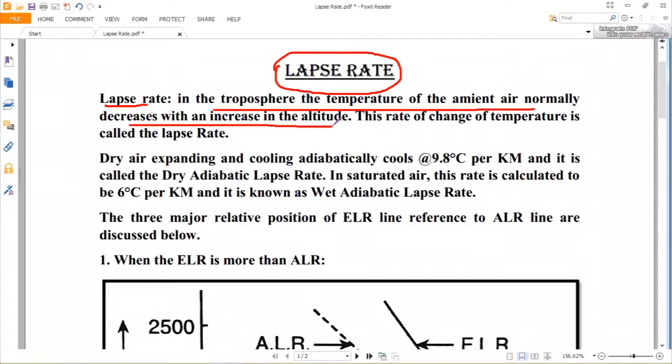This rate of change of temperature is called the lapse rate. This rate will differ from place to place and from time to time, even at the same place. Hence, the prevailing lapse rate at a particular time and particular place, which can be determined by sending up a balloon equipped with a thermometer and a self-recording mechanism, is known as the prevailing lapse rate, or the ambient lapse rate, or the environmental lapse rate.